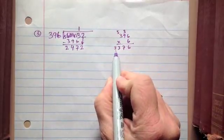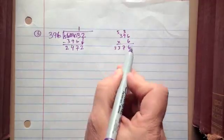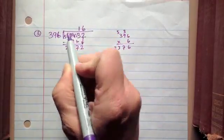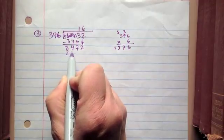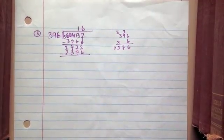So I can see right now 2,376 is pretty close to 2,472, so I chose the right number. So I'm going to put a 6 here, and then 6 times 396 equals 2,376, and I need to subtract those two numbers.